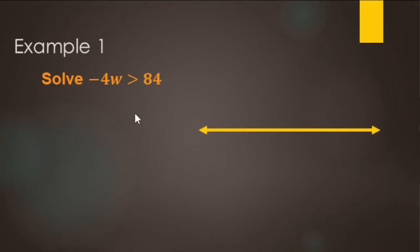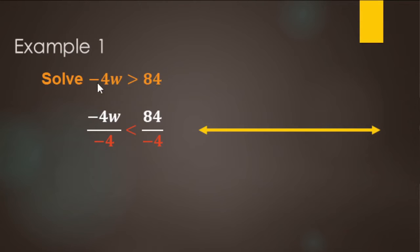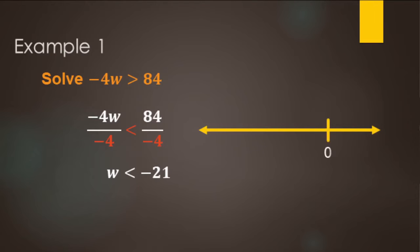Let's solve this on your own — pause the video and then come back. We're going to solve negative 4w is greater than 84. We're treating the inequality symbol just like an equal sign, with the one exception: if we multiply or divide by a negative. To undo w being multiplied by negative 4, we divide both sides by negative 4. When we divide by a negative, we switch the direction of the inequality. So we get w, and 84 divided by negative 4 — positive divided by negative is negative. 84 divided by 4: 80 divided by 4 is 20, and 4 divided by 4 is 1, so that's negative 21. On the number line, we have 0 and negative 21. It's strictly less than, so it's an open circle, and we shade all numbers to the left of negative 21.